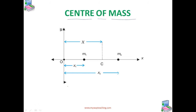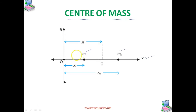For simplicity, let us consider a system which has only two particles m1 and m2, as you can see in this particular figure. The particle m1 and the particle m2 are at distances x1 and x2 from the origin O. We take the line joining the two particles to be the x-axis.